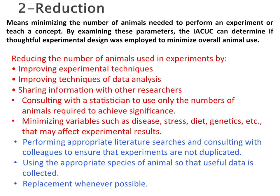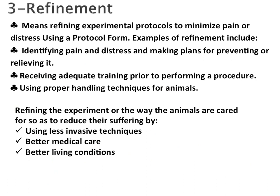The second R is reduction. If it is impossible to replace an animal model, at least we can reduce the number of experimenting animals by improving experimental techniques, improving techniques of data analysis, or sharing information with other researchers. The third R is refinement, which means modifying the experimental protocol to minimize pain or distress to the animal. This is possible by using less invasive techniques, better medical care, or providing better living conditions to animals.